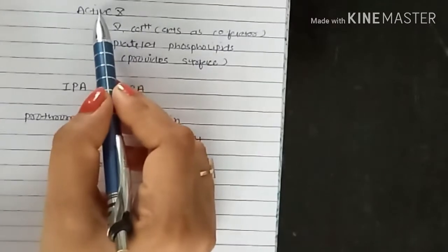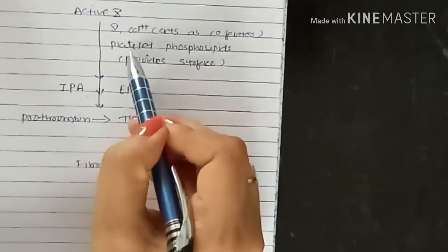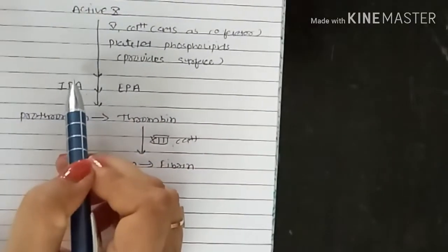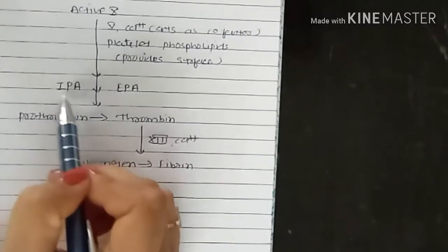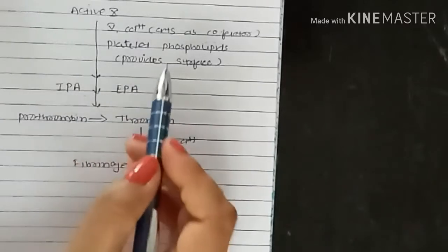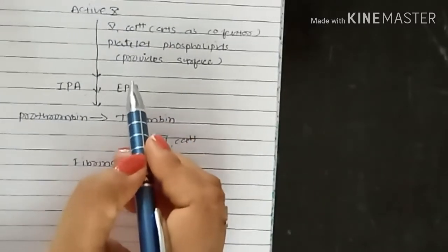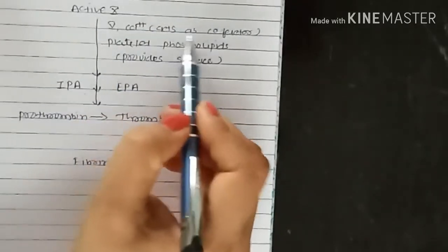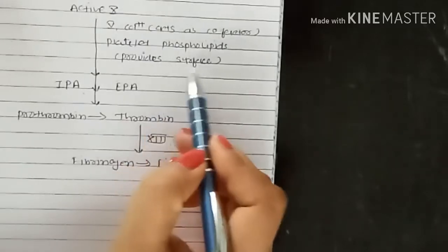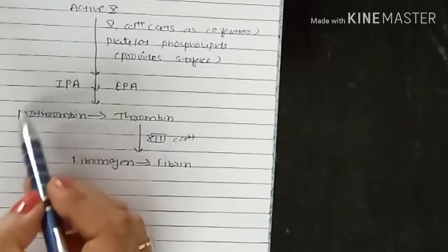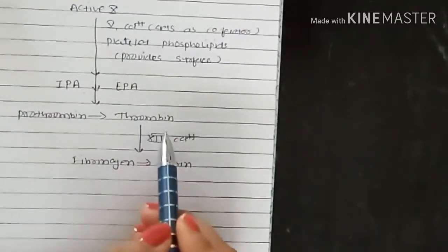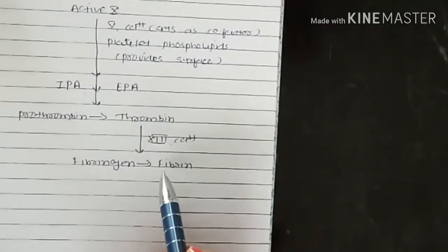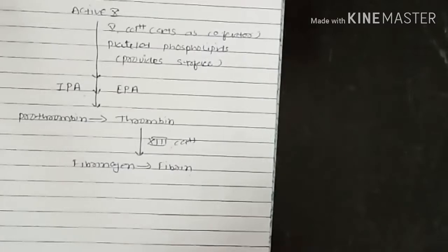Activated factor 10 interacts with factor 5, calcium, and platelet phospholipids to form prothrombin activator. When prothrombin activator is formed via the intrinsic system, it is called intrinsic prothrombin activator. If formed via the extrinsic system, it is called extrinsic prothrombin activator. Factor 5 acts as a co-factor and phospholipids provide the surface. These prothrombin activators act on prothrombin to form thrombin, which in the presence of factor 13 and calcium acts on fibrinogen to form insoluble fibrin.